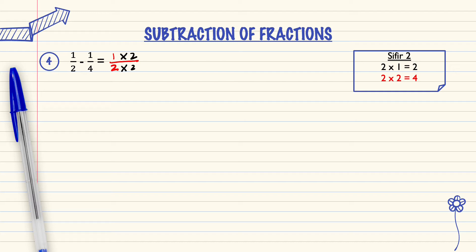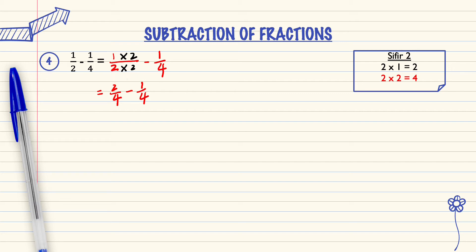1 over 4, we rewrite it. Now as we can see, the denominator is the same. So we can subtract the numerator: 2 minus 1 equals 1 over 4. So this is the answer.